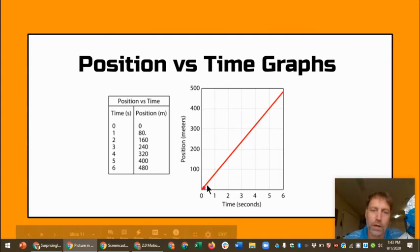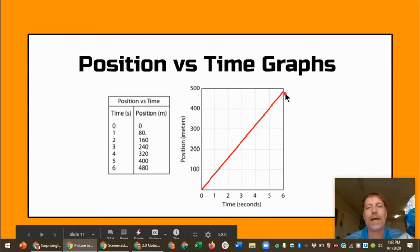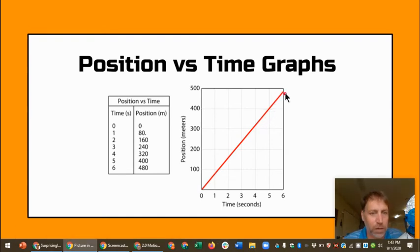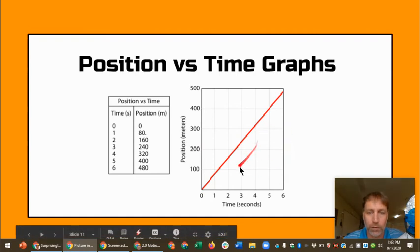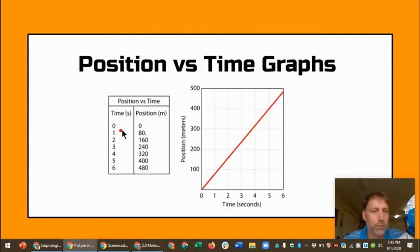So it makes sense if it's a constant velocity that this is going to be a straight line here because the velocity has not changed. So the data points that have gone in to make this line graph are right here. So at time zero or the initial time that you started before you started the clock, you were at position zero. You have not moved yet.